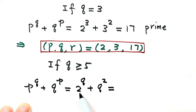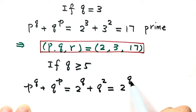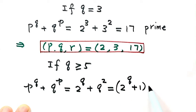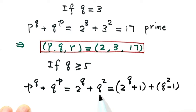We can reorganize this expression as (2^q + 1) + (q² − 1), where the +1 and −1 cancel out. Let's mark this rearranged form with a star and work on each part separately.